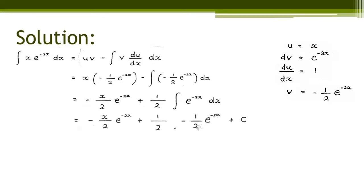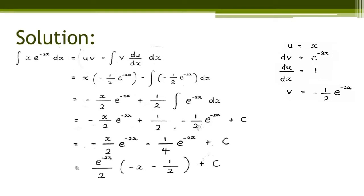Therefore, we get negative x over 2 e to the power of negative 2x minus 1 over 4 e to the power of negative 2x plus c. We then factorize and get e to the power of negative 2x over 2, open bracket, negative x minus 1 over 2, close bracket, plus c.